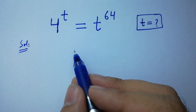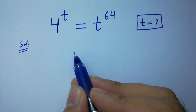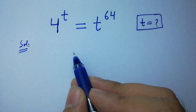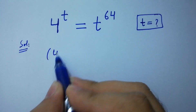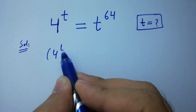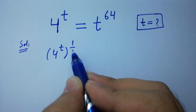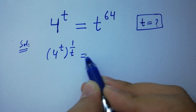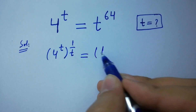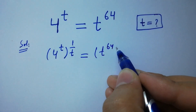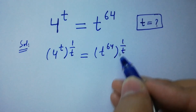To solve this, take power 1 over t on both sides: 4 to the power t, to the whole power 1 over t, equals t to the power 64, to the whole power 1 over t.